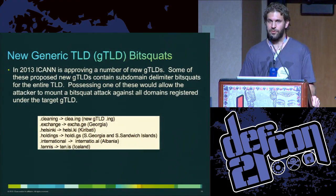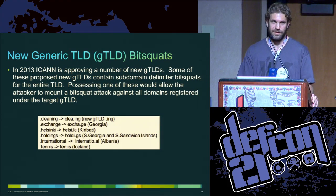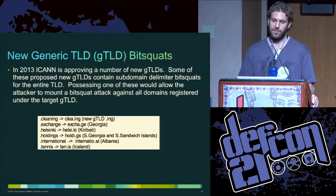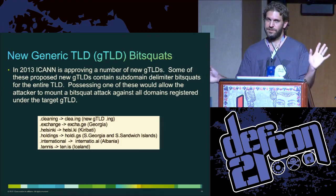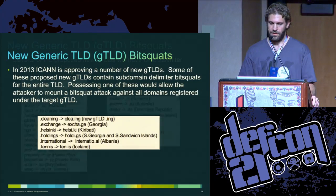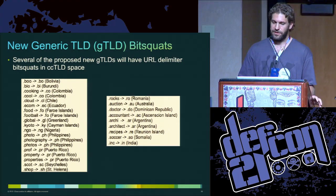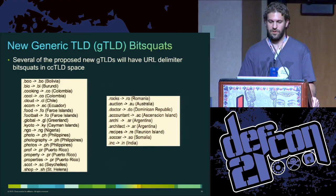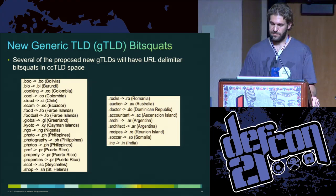What about all the new generic top-level domains coming out? Using these previous techniques, you could register a bit squat to bit squat the entire top-level domain. One of the most interesting is .exchange, supposed to be used for financial exchanges — if you registered XJ.GE in Georgia, you could potentially receive bit squats for any domain registered under .exchange. There are also bit squats possible in new gTLDs based on the letter O, such as .boo and .bio, and the corresponding country code TLDs where those bit squats exist, as well as ones based on the letter C.